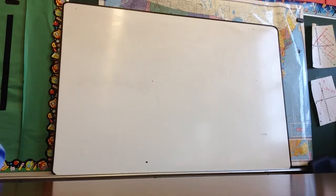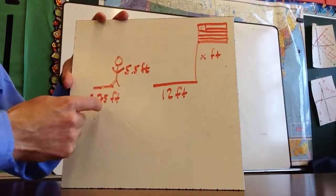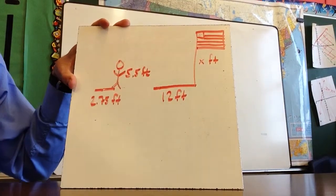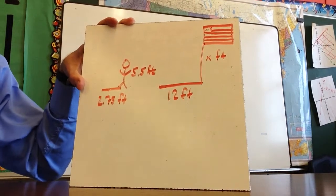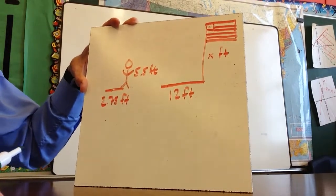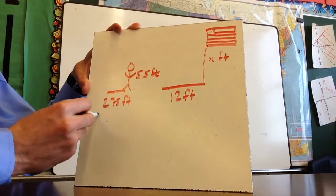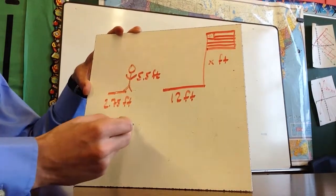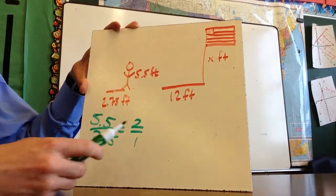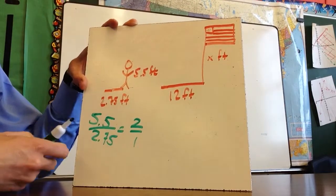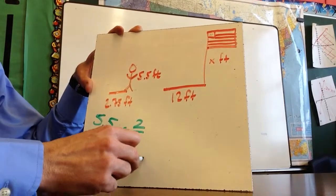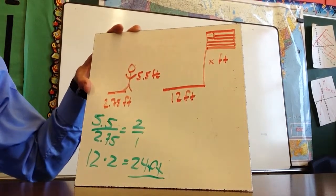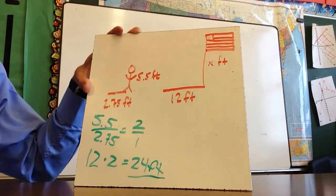Finally, we look at the shadow problem — a fairly typical application. A person casting a shadow of 2.75 feet, and a flagpole casting a shadow of 12 feet. The question is: how tall is the flagpole? One method: the person is 5.5 feet tall, shadow is 2.75 feet, so 5.5 divided by 2.75 equals 2 — the person is twice as tall as the shadow. Therefore, 12 times 2 equals 24 feet.